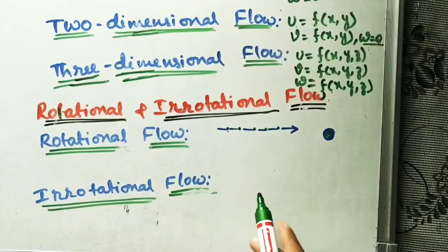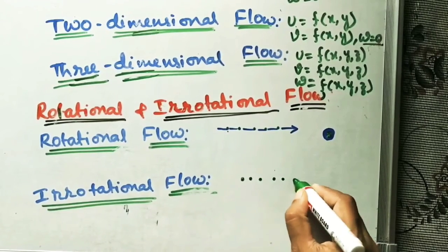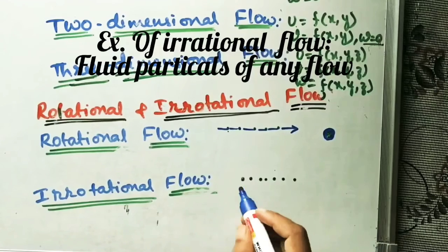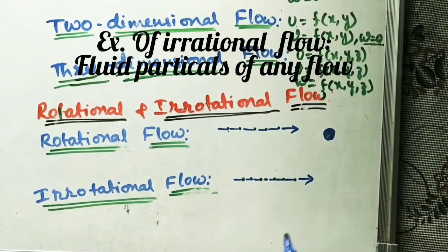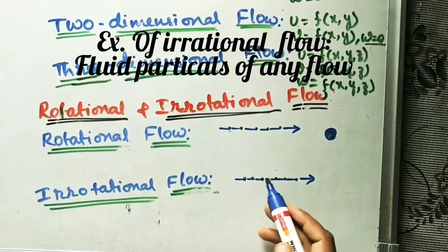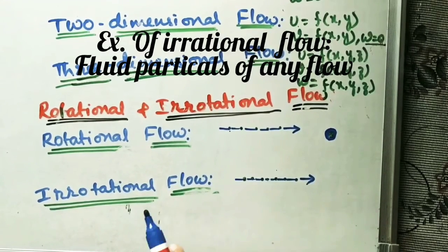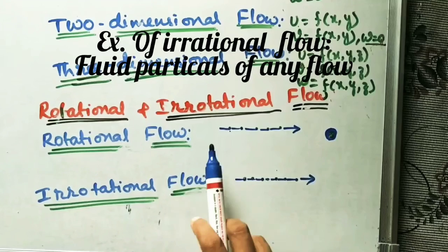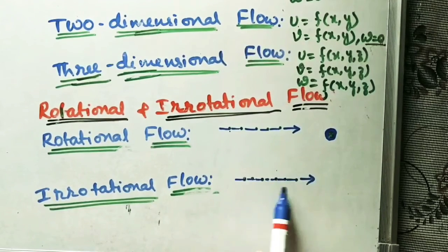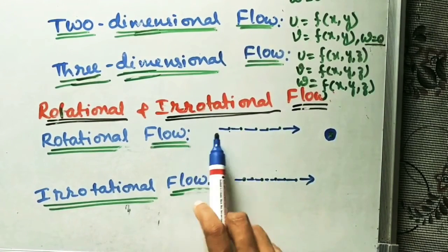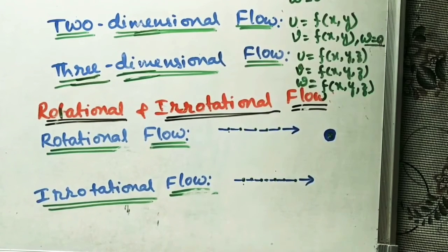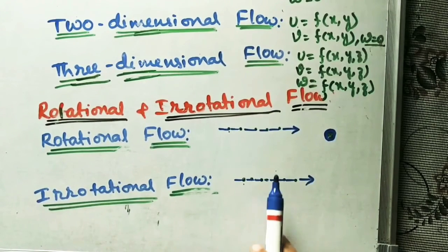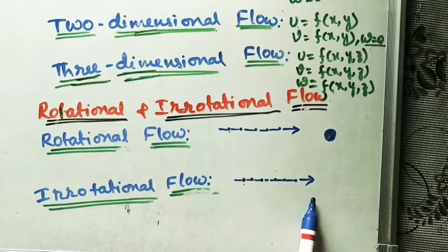In irrotational flow, flow is also along the streamline, but particles do not rotate about their own axis — that is called irrotational flow. Remember: in both cases, particles are moving along the streamlines. The difference is that in rotational flow, particles rotate about their own axis, while in irrotational flow, particles do not rotate about their own axis.